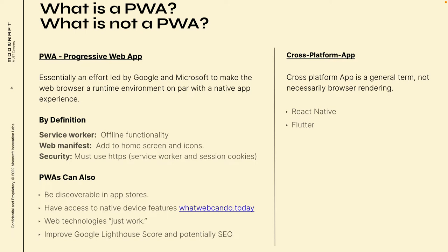By definition, a progressive web app just needs a service worker and it needs to work offline. You've never seen a native app that gives you the running dinosaur — it's got to work offline completely. The web manifest is just a JSON file that basically gives you your icons for an app, so when you add it to your home screen it looks like an app. Security just needs to be over HTTPS, and the service worker works in the background — to take care of security concerns it always needs to be over HTTPS.